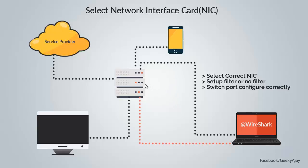Make sure your system is connected to the correct mirror port on the switch. If your system is not connected to the mirror port, the network traffic cannot be captured properly. Also make sure your switch port is configured correctly. Multiple NICs can help by defining different types of capture filters, or applying no filters, for different types of data.